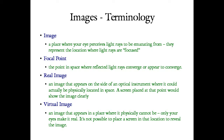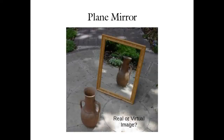We can revisit the picture of the plane mirror. We have this clay jar and we see its reflection appearing to be located on the other side of the mirror. If you were to put a camera behind the mirror, you'd see nothing. This is a virtual image — your eye makes it real, but it's not really physically located on the other side of the mirror.